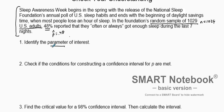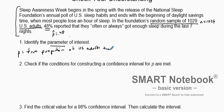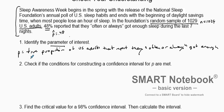Our p-hat is going to be 0.48. The question asks us to identify the parameter of interest. In this case we have a proportion, so we're looking for the true proportion. P is going to equal the true proportion of US adults that report they often or always got enough sleep during the last seven nights.